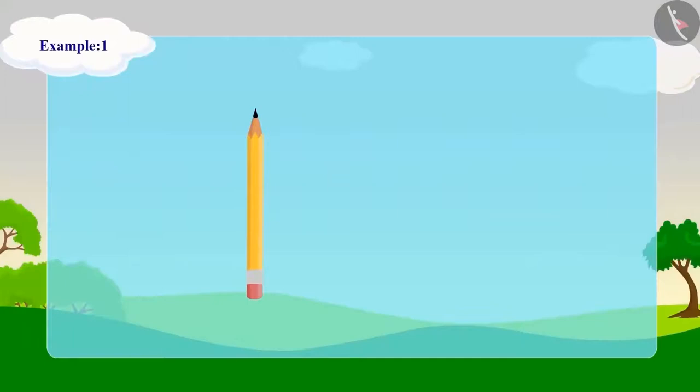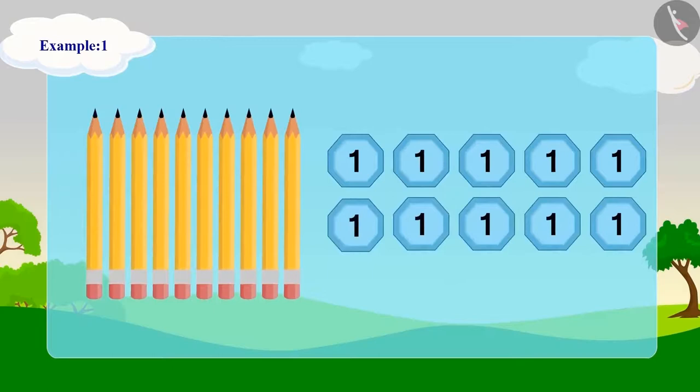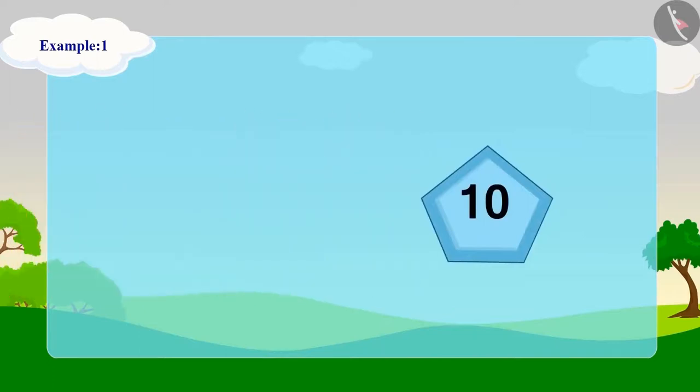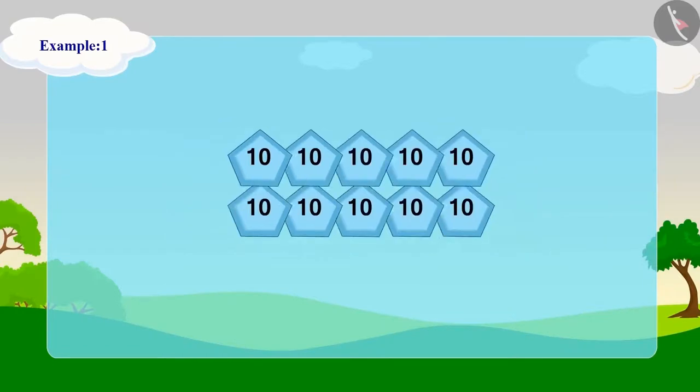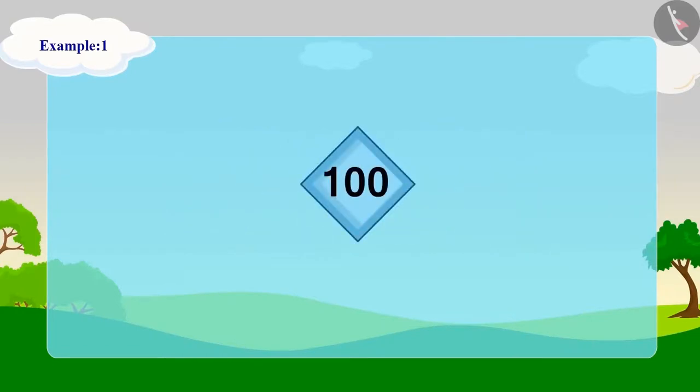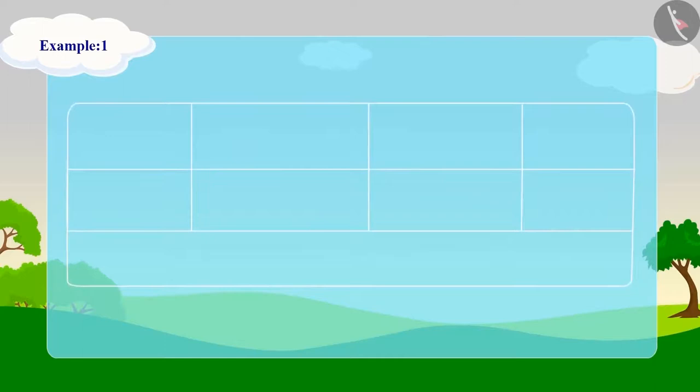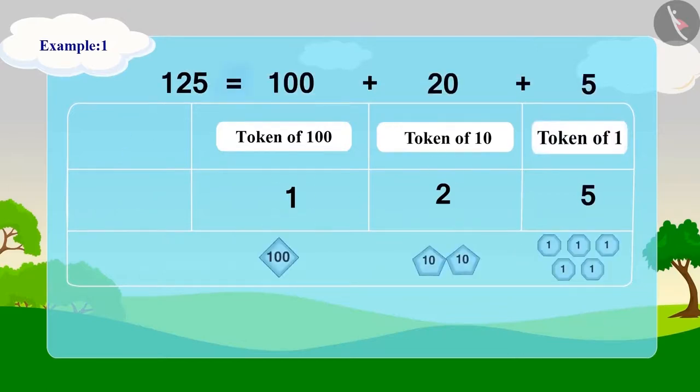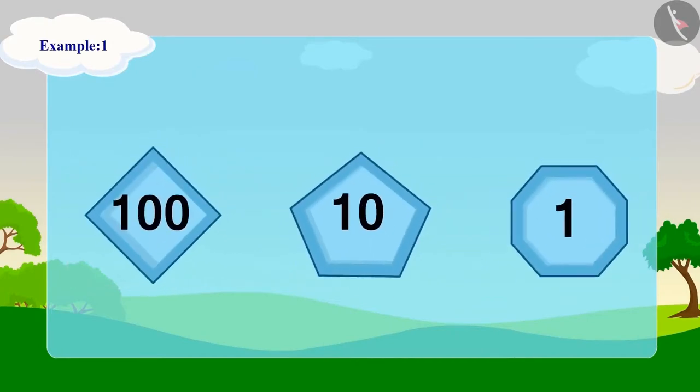Every pencil Appu counts, he places a token with the number 1 on the table. When he has such 10 tokens, he changes them with a token that has 10 written on it. Now, when he has such 10 tokens, he replaces them with a token with 100 written on it. In this way, Appu counted all 125 pencils and showed them with 1 token of 100, 2 tokens of 10 and 5 tokens of 1. Appu counted 125 pencils using his tokens. We can easily identify and write three-digit numbers using such tokens.